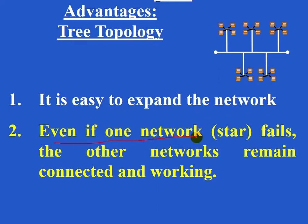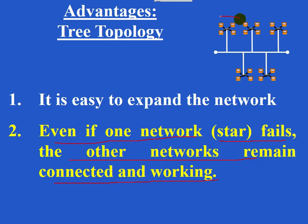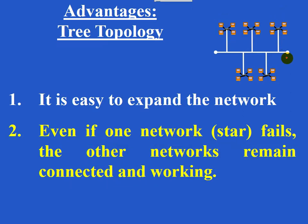Even if one network, i.e. one star topology fails, the other networks remain connected and working. So even if one star topology fails, still the other star topologies can communicate using this network.